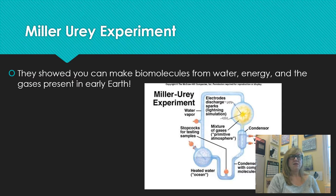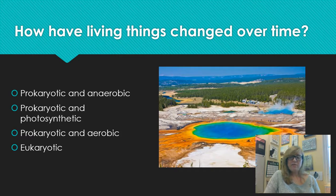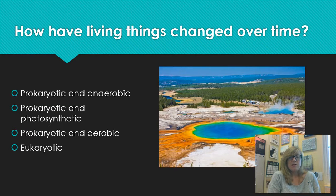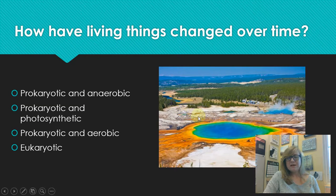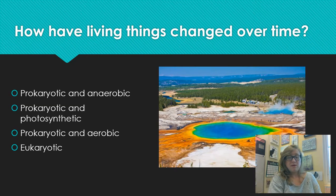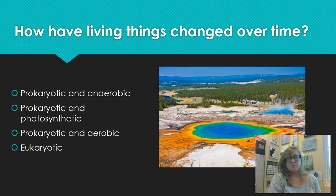So how have living things changed over time? The first living creatures we know of on Earth were prokaryotic - like bacteria, very small, no nucleus, very simple. They were also anaerobic because there was no oxygen on early Earth, so they had to use other gases. Around geysers we see discoloration from some of these bacteria. A lot of them were probably extremophiles, living under extreme conditions - extreme heat, saltiness, or acidity.